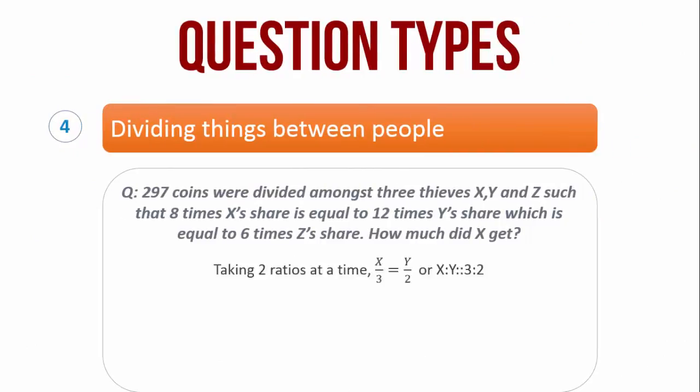Now, taking two ratios at a time, we take x by 3 is equal to y by 2. Converting this into a ratio, we have x is to y is as 3 is to 2.